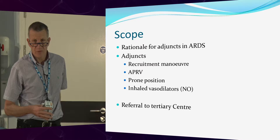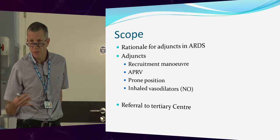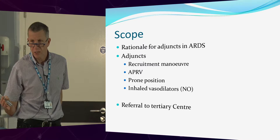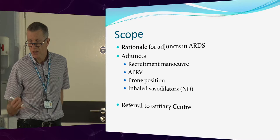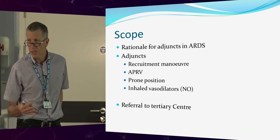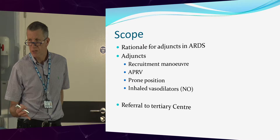Once you understand the rationale behind what causes ventilator-associated lung injury — the concept that if you take a normal set of lungs and ventilate them with high inflation pressures, around 10-12 mils per kilo, pressures above 30 centimetres of water, and give them high amounts of oxygen for a few days, the lungs will change and will look like ARDS. And that's because of ventilator-associated lung injury.